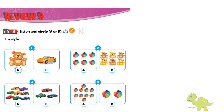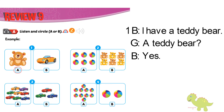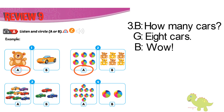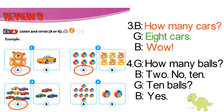Now listen again. Review 9. A. Listen and circle A or B. 1. I have a teddy bear. A teddy bear? Yes. 2. How many balls? 6 balls. 3. How many cars? 8 cars. 4. How many balls? 2. No. 10. 10 balls? Yes. Now listen again.